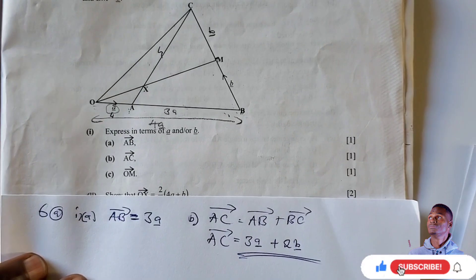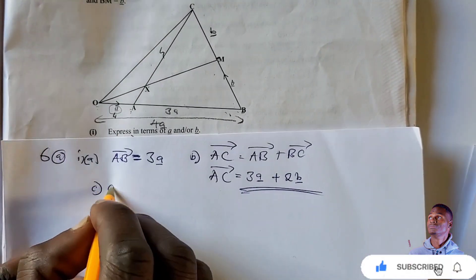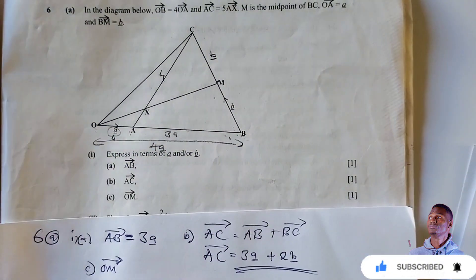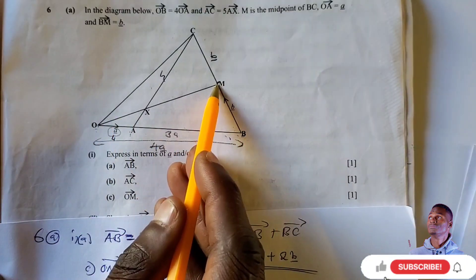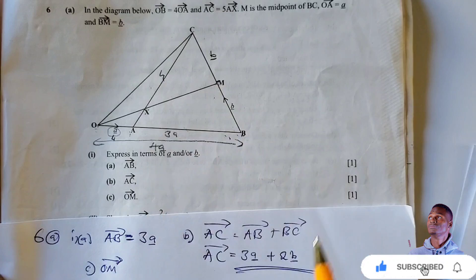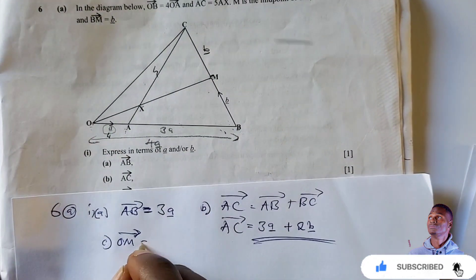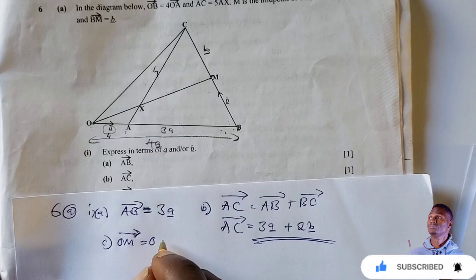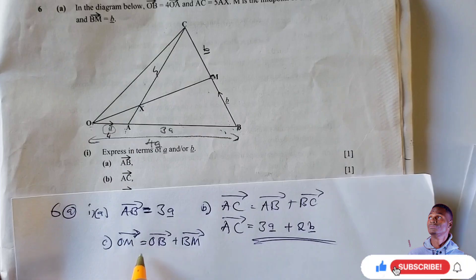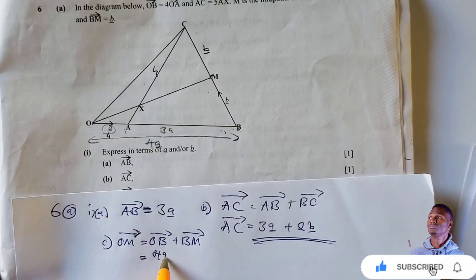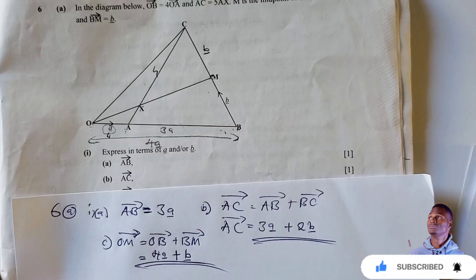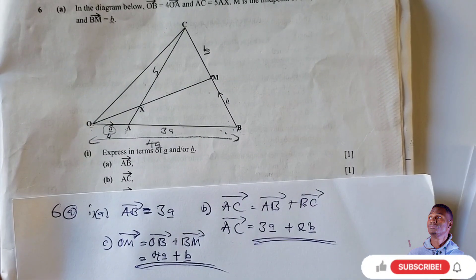Part C: find vector OM. Looking at the diagram, we can move from O to B, then B to M. So OM equals OB plus BM. OB is four vector A, and BM is vector B. That's the answer — it's direct.